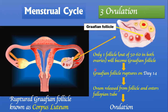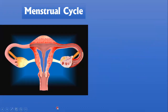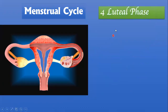At the end of ovulation, two things occur: the ovum is now present within the fallopian tube, and you have a ruptured follicle remaining in the ovary. This ruptured follicle is known as the corpus luteum, which brings us to the fourth phase — the luteal phase.